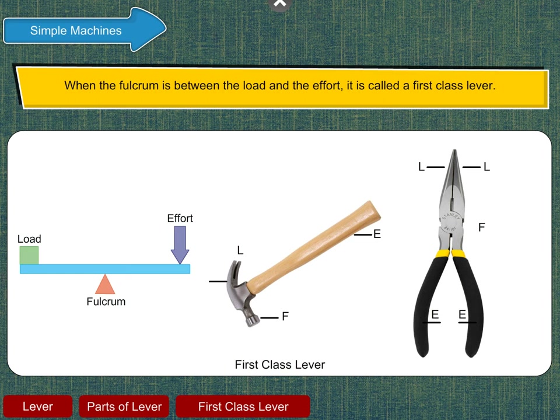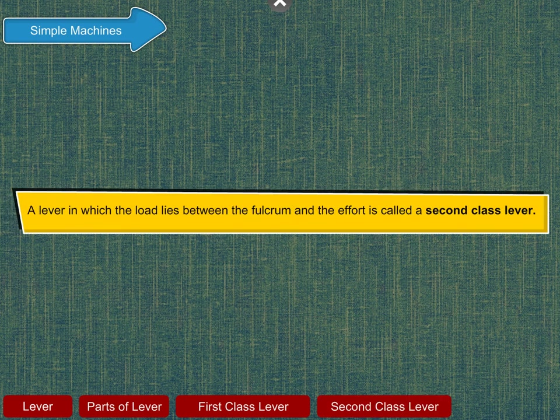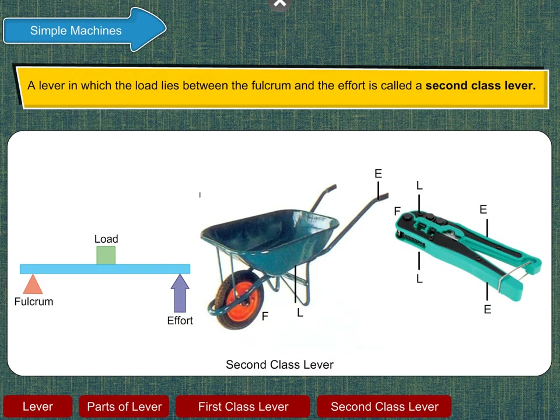A lever in which the load lies between the fulcrum and the effort is called a Second Class Lever.